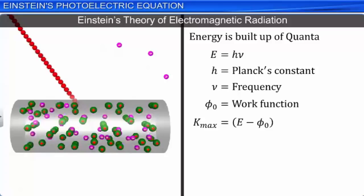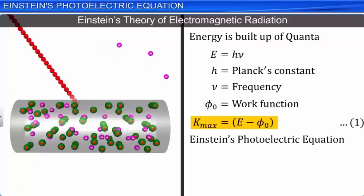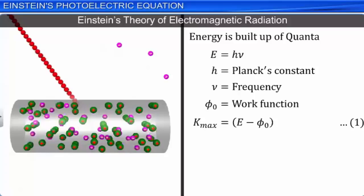This is referred to as Einstein's photoelectric equation. However, electrons which are more tightly bound emerge with kinetic energy less than K_max. Since kinetic energy cannot be negative, we have E greater than φ₀ for photoelectric emission. And since E is equal to hν, we have hν greater than φ₀, or ν greater than ν₀, where ν₀ is the threshold frequency of the metal, equal to φ₀/h.